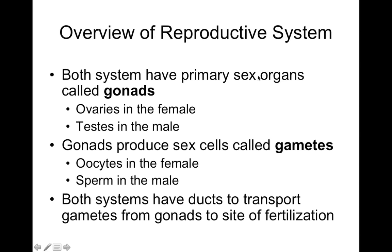Both systems use sex organs called gonads. Gonads are the ovaries in females and testes in males — the sex cell-creating organs. In ovaries, they make oocytes; in the testes, they make sperm cells. This is the site of gamete formation — a gamete is a sex cell. Both systems also utilize a series of ducts used to transport and store gametes, or act as a site of fertilization, like for females.